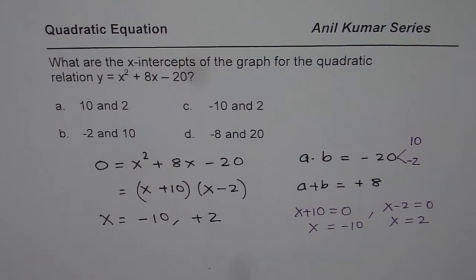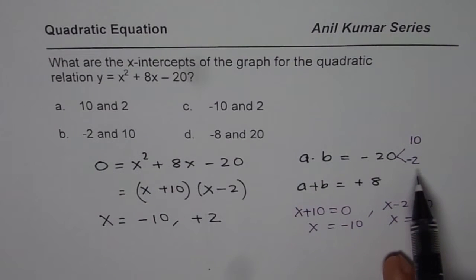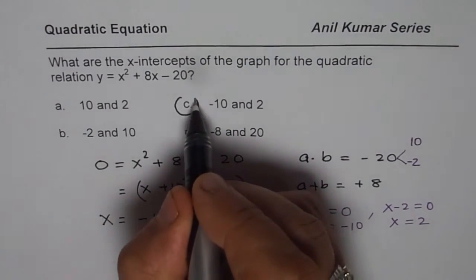Now, what really happens is, in the test, when you get these factors, you may just circle the wrong answer. The real answer here for you is -10 and +2, which is C. Do you understand?